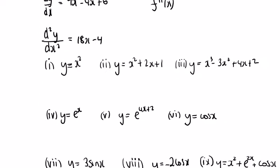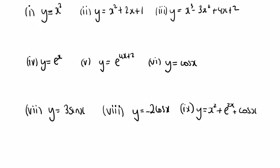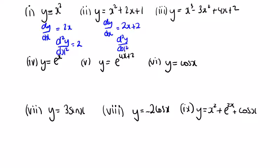Attempt these nine questions here to show that you know how to differentiate twice. It's really straightforward. dy dx is equal to 2x, so d squared y dx squared is equal to 2. Number 2: dy dx is equal to 2x plus 2, so d squared y dx squared is equal to 2 again. And the third one: dy dx is equal to 3x squared minus 6x plus 4, so d squared y dx squared is equal to 6x minus 6.